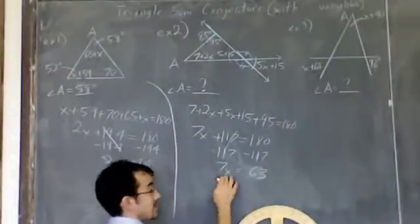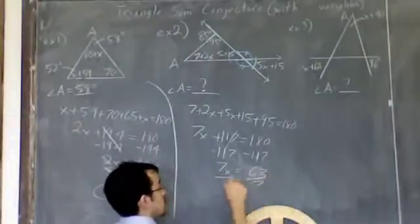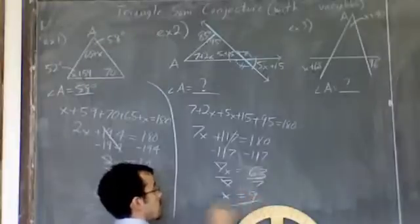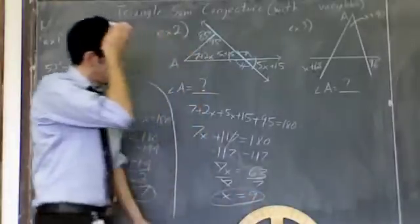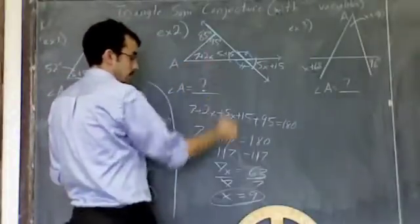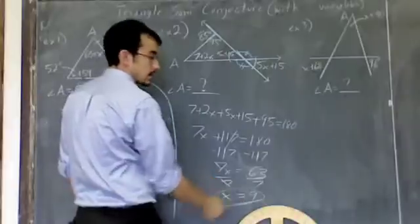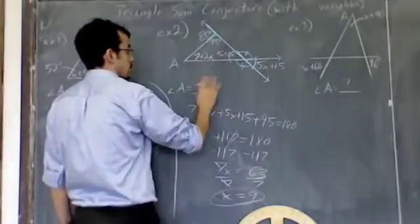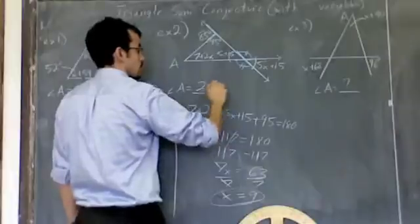So here, since it's 7 times x divided by 7, you get x is 9. And then again, we plug it back in. So I want to know what this is. This says 7 plus 2x. Well, now it says 7 plus 2 times 9. 2 times 9 is 18. 18 plus 7, I know that A is now 25 degrees.